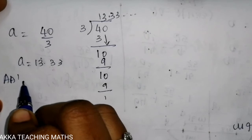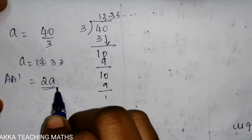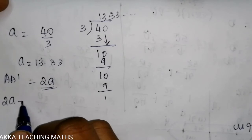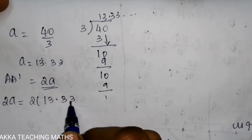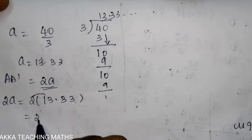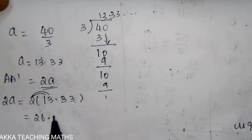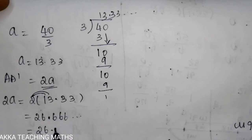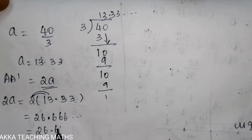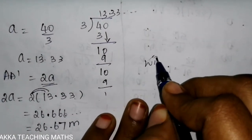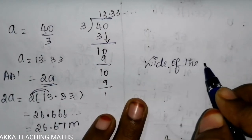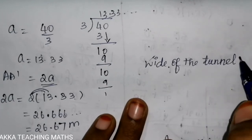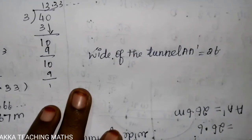So we can get the full length. A to A-dash is the major axis, that is the length 2a. So 2a = 2 × 13.33 = 26.66, approximately 26.7 meters.